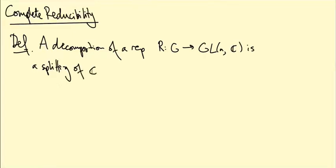In other words, the vector space on which these matrices act as a direct sum V_1 direct sum up to V_k where each V_i is a sub-representation of C^n.